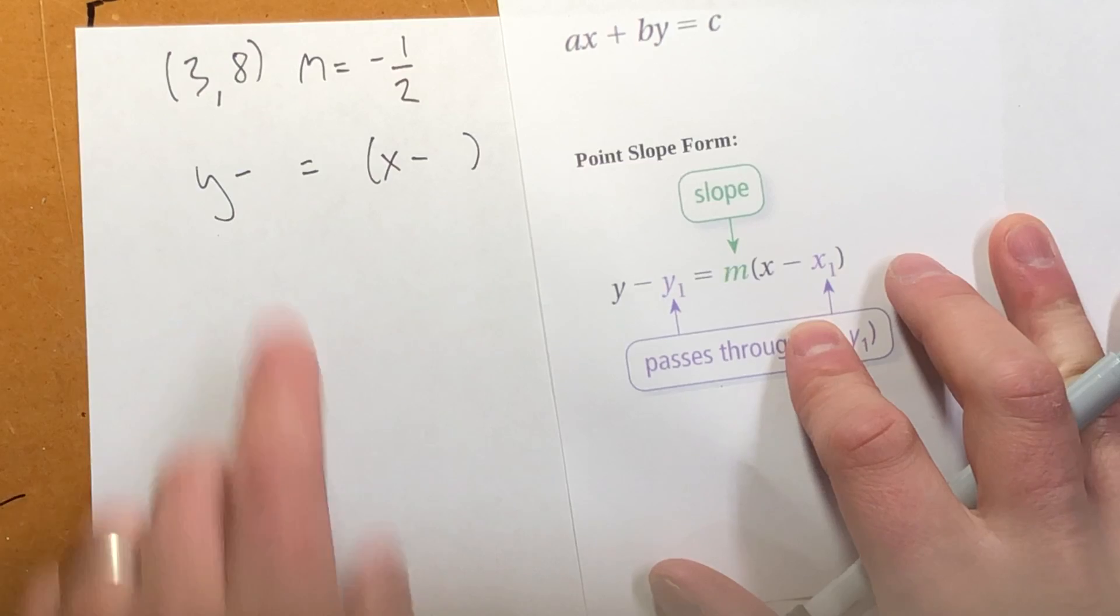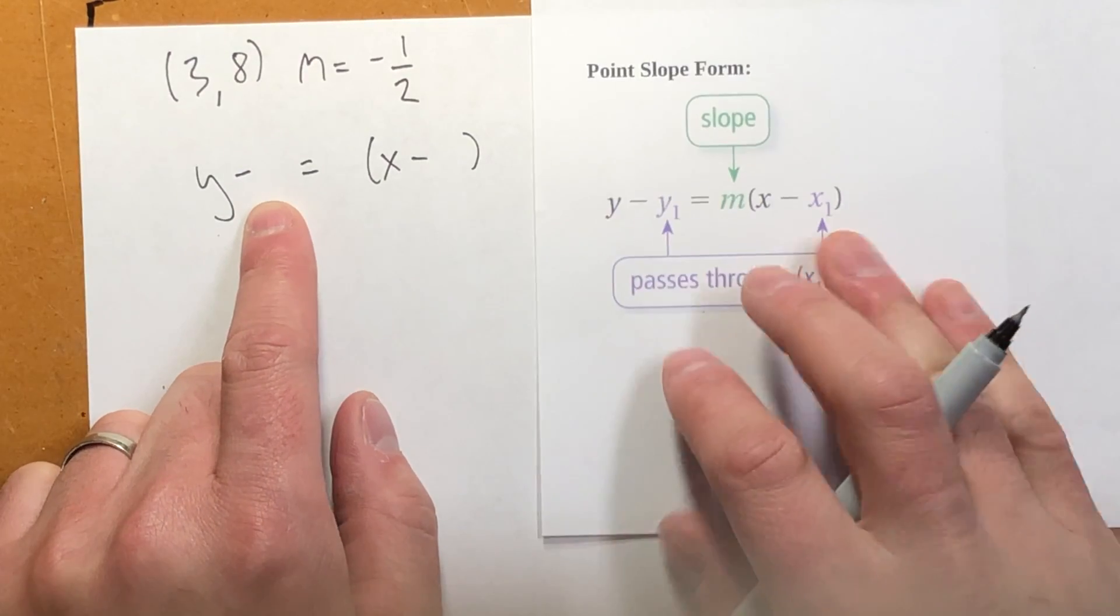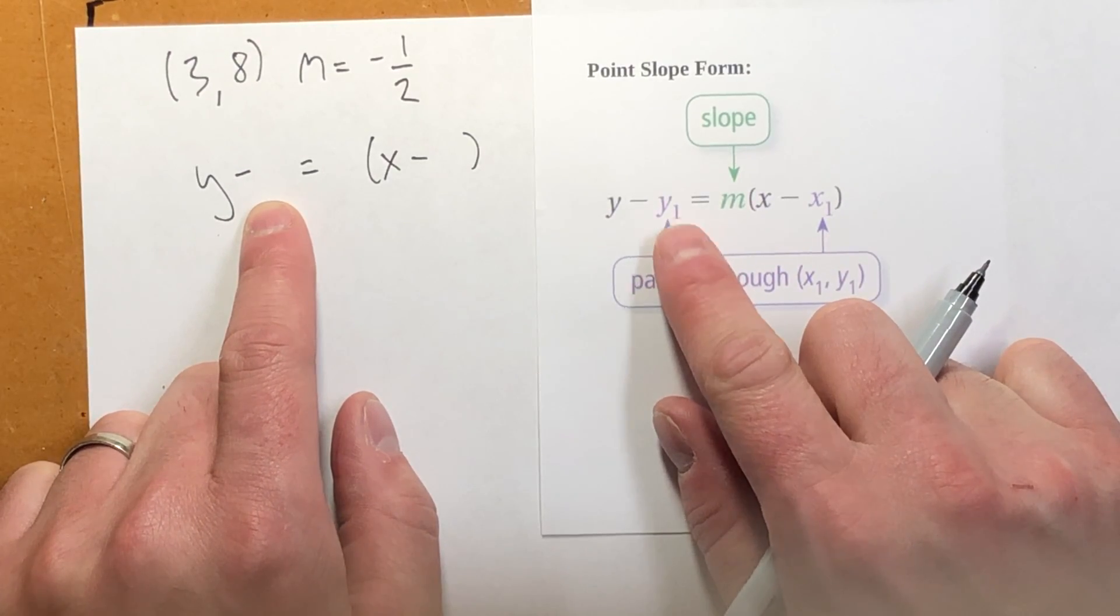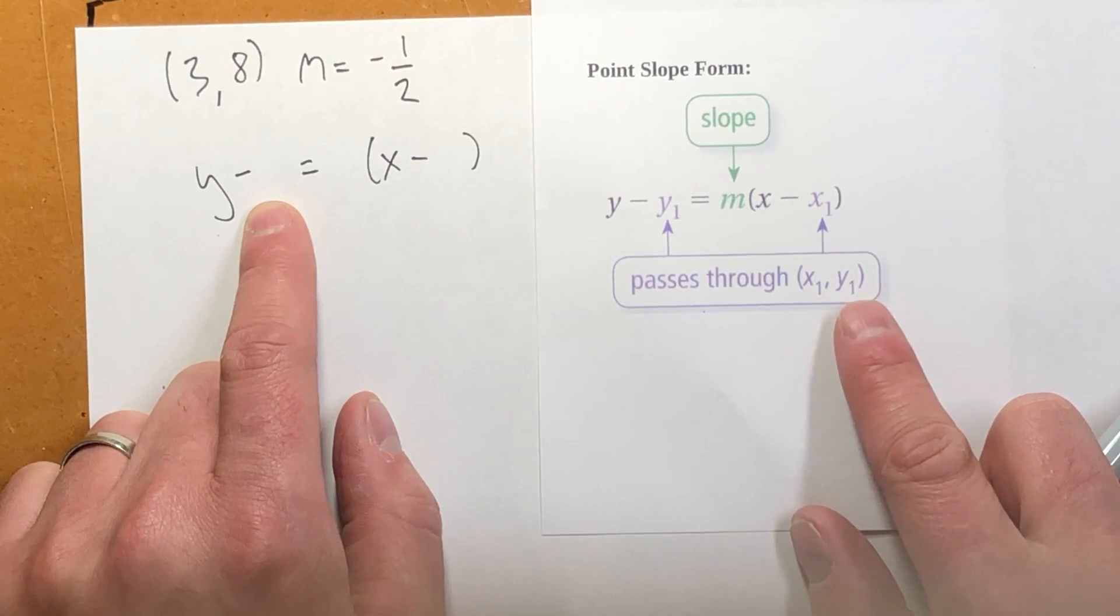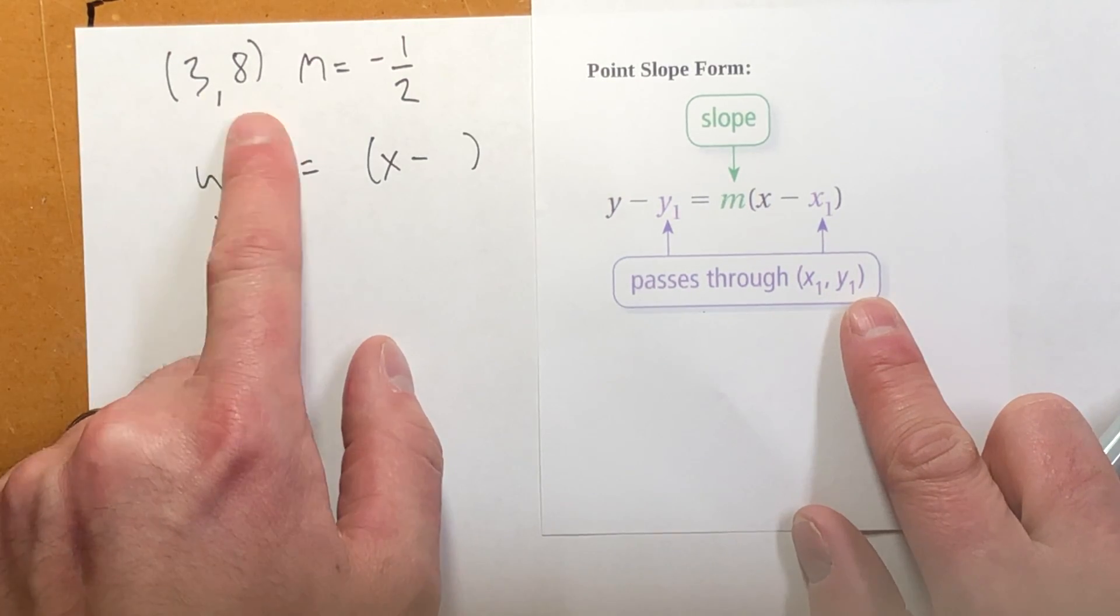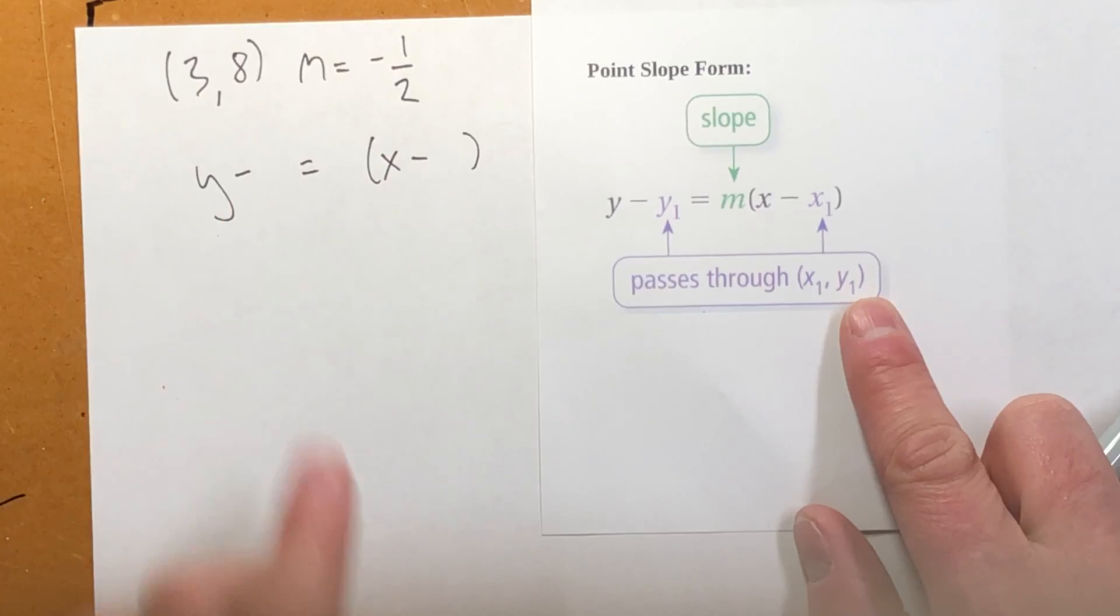Now in this first blank spot that I awkwardly left, I want the y value of the given point. That's all y1 is. So in this case, it's 8.